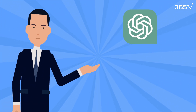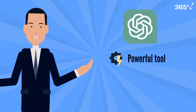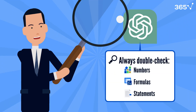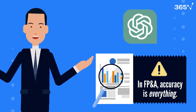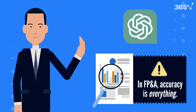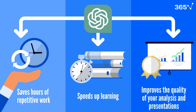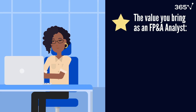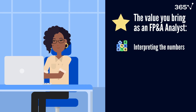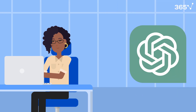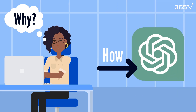Having said this, we should remember that ChatGPT is a powerful tool, but it's not perfect. Always double-check the numbers, formulas, and statements it gives you. In FP&A, accuracy is everything. You are still the analyst — ChatGPT is just your assistant. If you use ChatGPT well, it can save you hours of repetitive work, speed up your learning, and improve the quality of your analysis and presentations. But remember, the value you bring as an FP&A analyst isn't just in producing reports. It's in interpreting the numbers, understanding the business, and communicating insights that drive decisions. So use ChatGPT to handle the how, and focus your energy on the why.